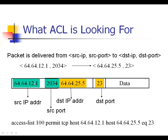A data packet is delivered from a source IP with a source port number to a destination IP with a destination port number. In this example, the source IP 64.64.12.1 originates on port 2034 and the destination is 64.64.25.5 on port 23 — a Telnet port. Access List 100 is configured to match this packet coming from source IP 64.64.12.1 going to destination 64.64.25.5 on port 23.